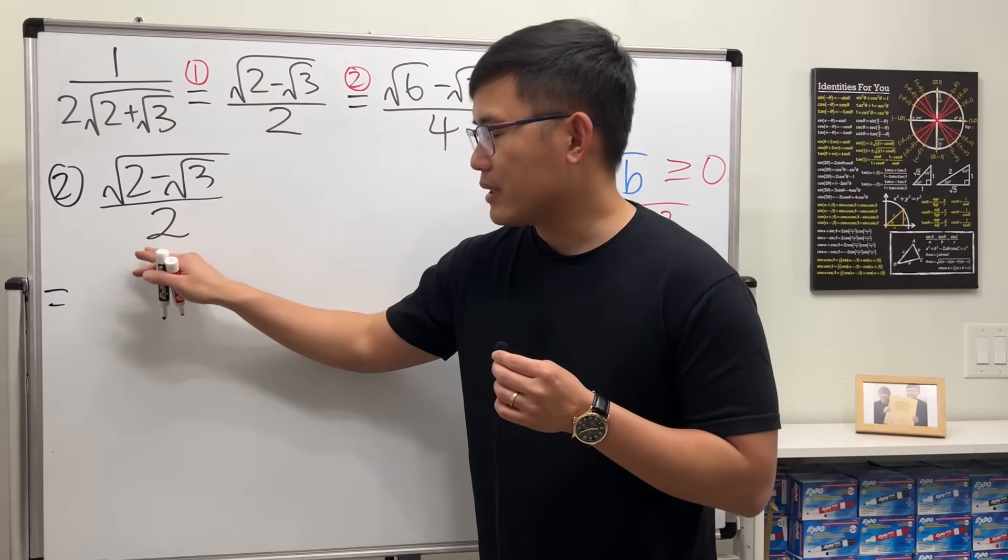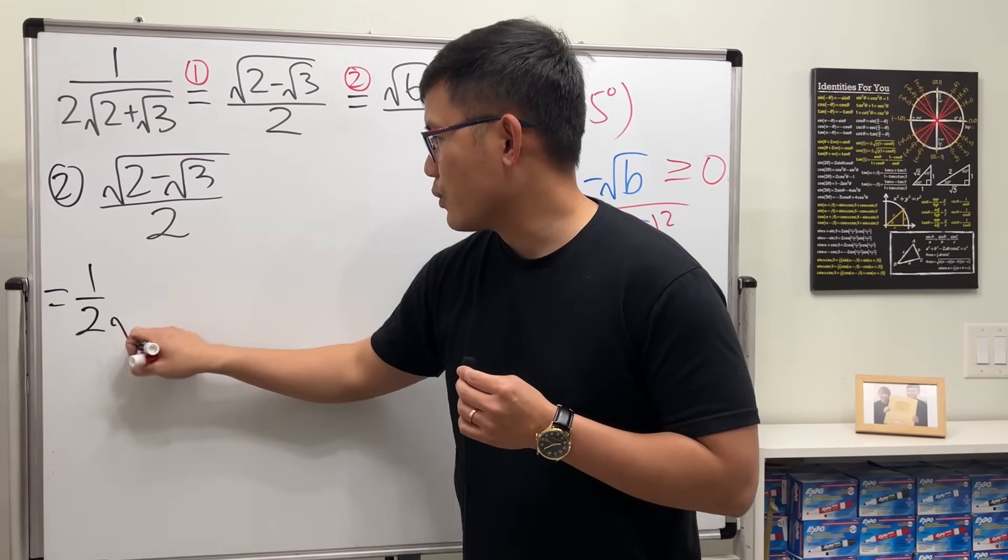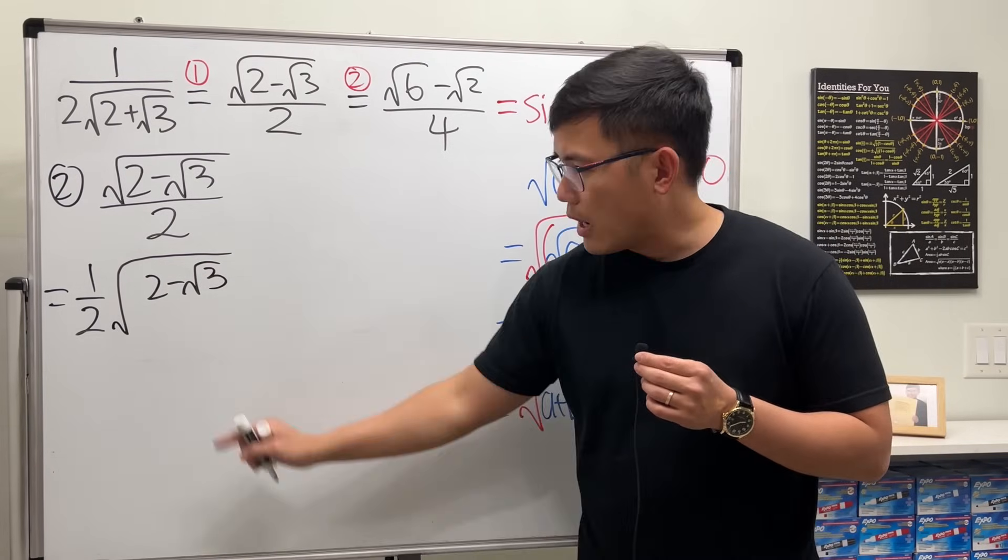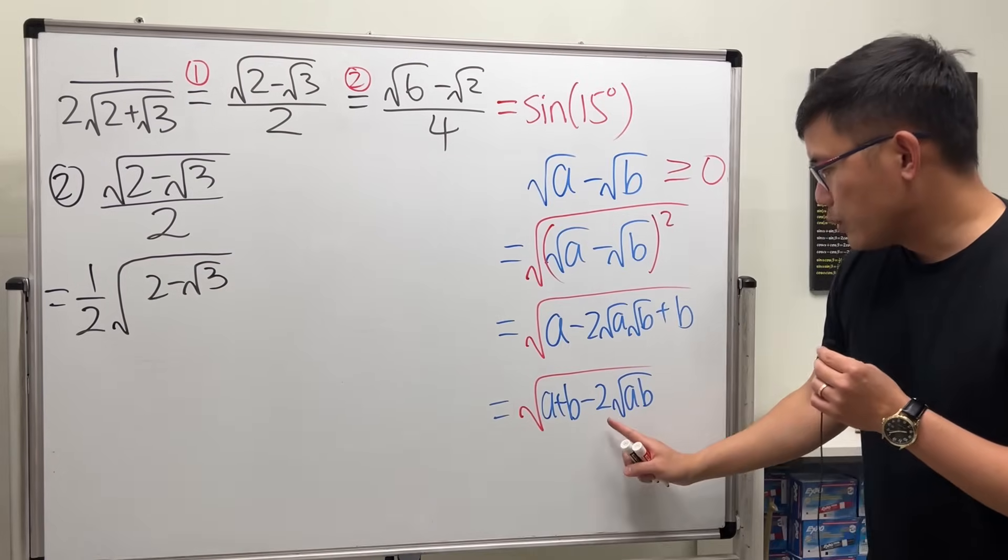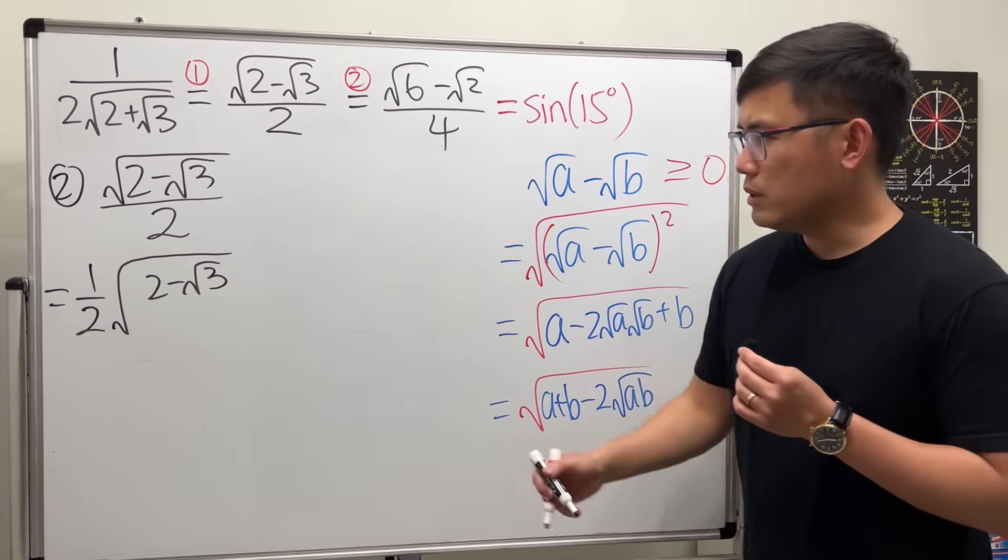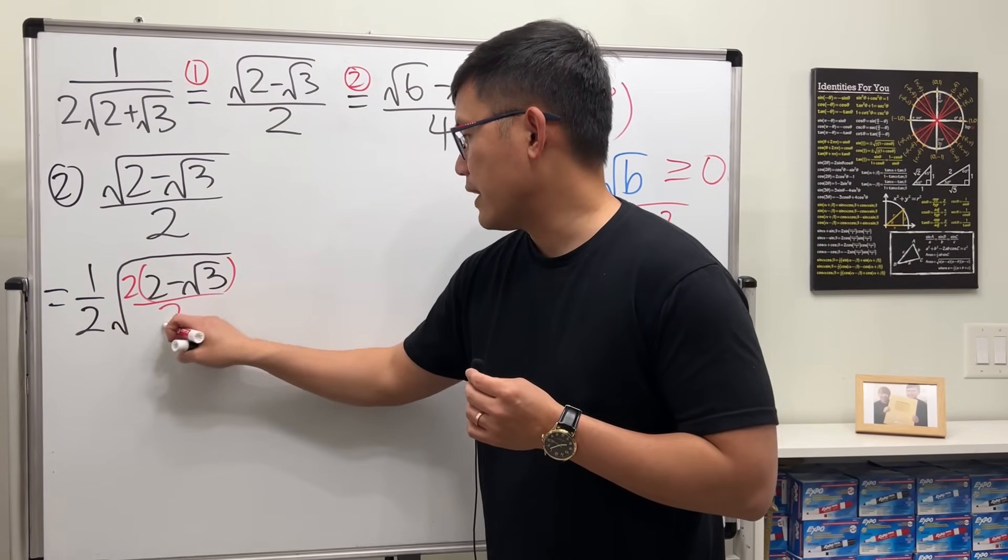So how do we make that happen? First, we have the two on the bottom. Let's just put that in the front like this. Let's focus on the square root. Two minus square root of three. Now, here, it looks that we should have a two, right? But we don't. What can we do? Well, how about let's try multiply the top by two and also divide the two right away?